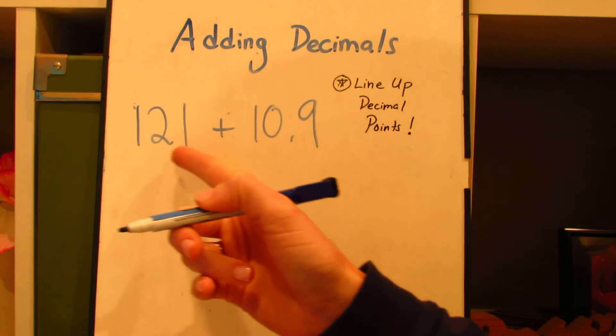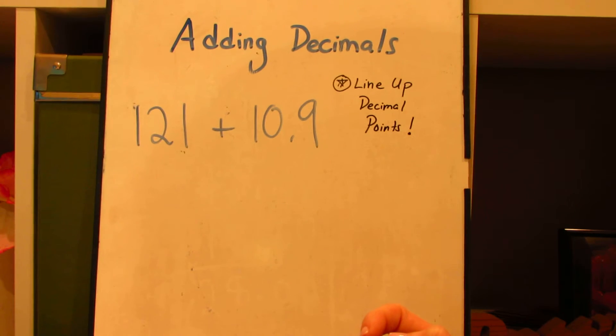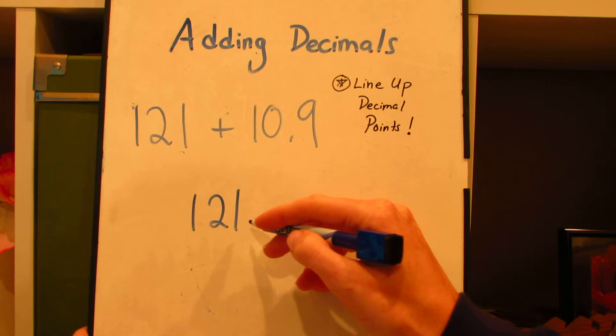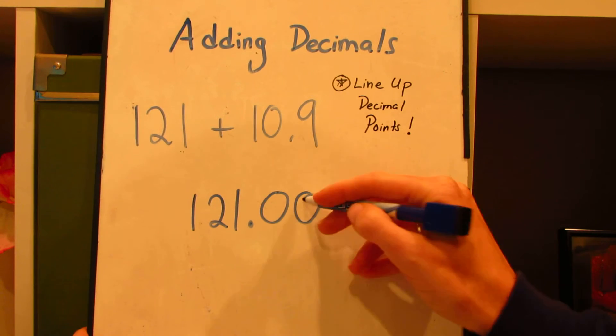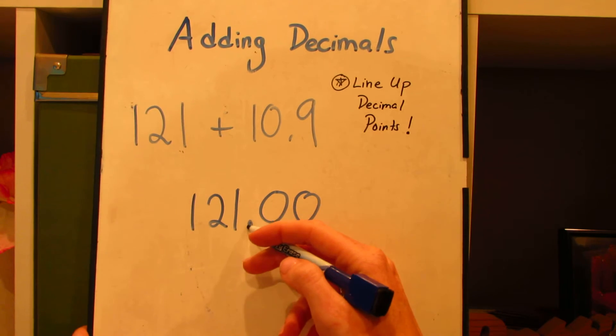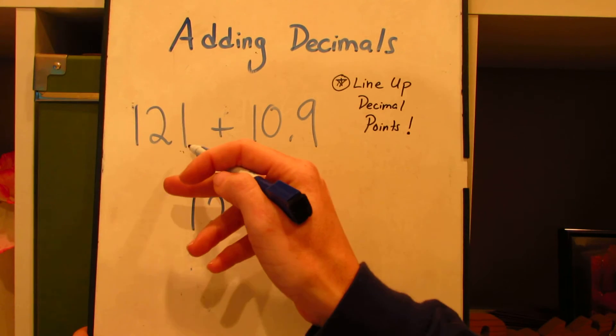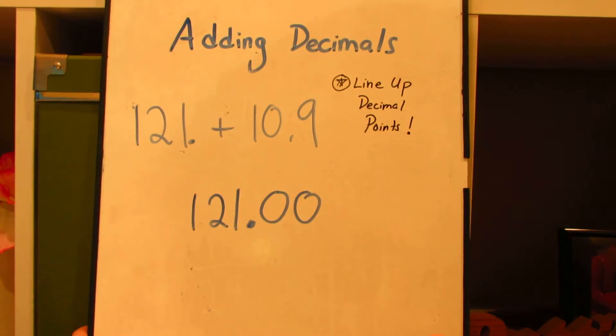But if you think about it as 121 dollars and no cents, I would write 121 dollars and no cents. So my decimal point would be hidden right after the whole number. So any whole number that you have, the decimal point's just right to the right of it.